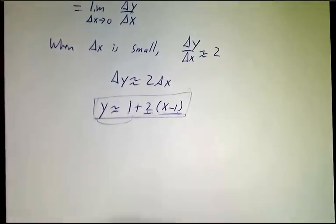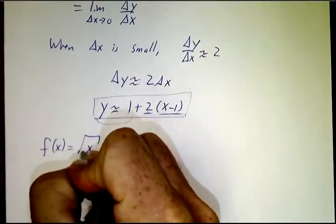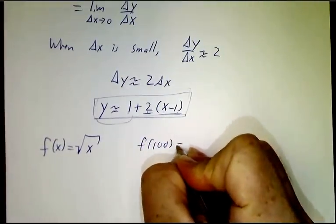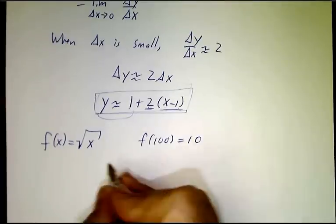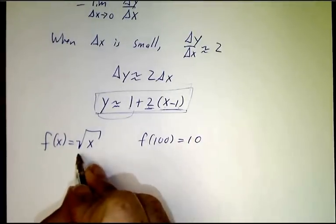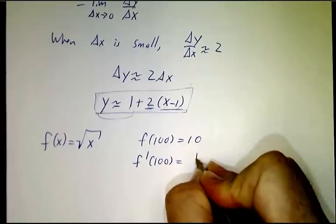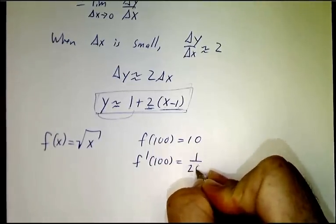For example, suppose I give you the function f(x) equals the square root of x. f(100) is 10, that's the square root of 100. Now, we'll soon learn how to take derivatives of functions like this, but let me just give you the fact that the derivative at 100 is 1/20.